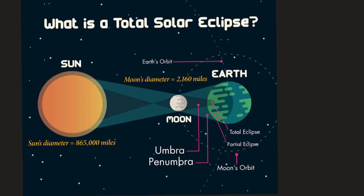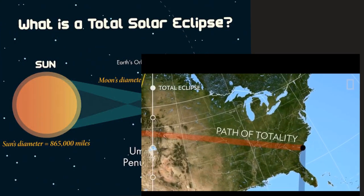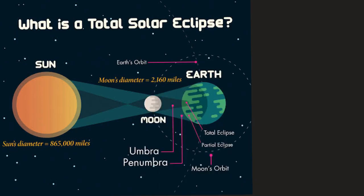A total solar eclipse happens when the moon entirely covers the sun. To observe this you need to be at a place on the earth that falls within the umbral shadow, which is the moon's darkest shadow. This umbral shadow creates an imaginary line that moves across the earth's surface known as the path of totality. You can only observe the total solar eclipse if your location lies on the path of totality.